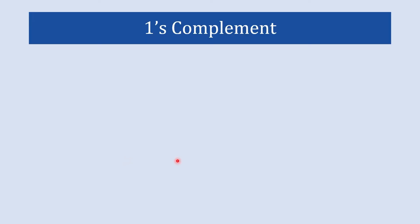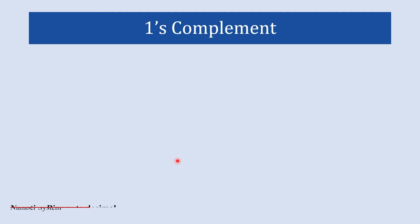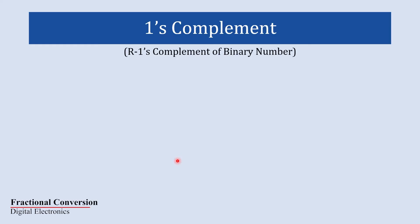As we have seen in our previous video on r's complement and r minus 1's complement, for the binary number system the 1's complement is nothing but the r minus 1's complement. To explore more on r's complement and r minus 1's complement you can refer to that previous video — the link is in the description and in the i button.